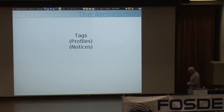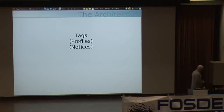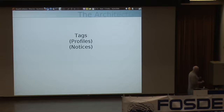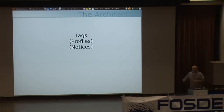We retain information about tags — you can include hashtags in a notice, and those tags are retained as a separate record for easy indexing. We also allow tagging of profiles, so you can tag people you know, group them together, and find other people in a community using tags like 'Ubuntu' or 'Fedora' or 'skiing.' We also store information about favoriting — we use 'fave' for this.